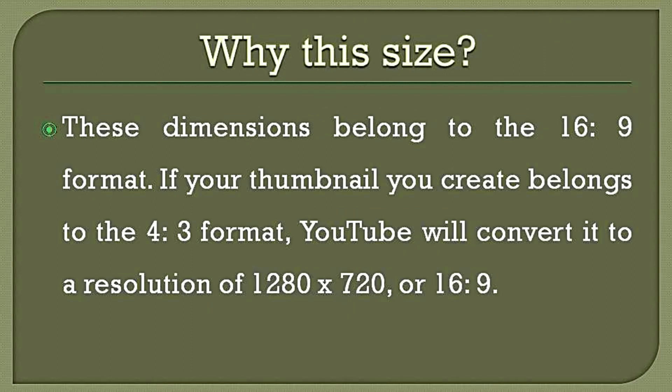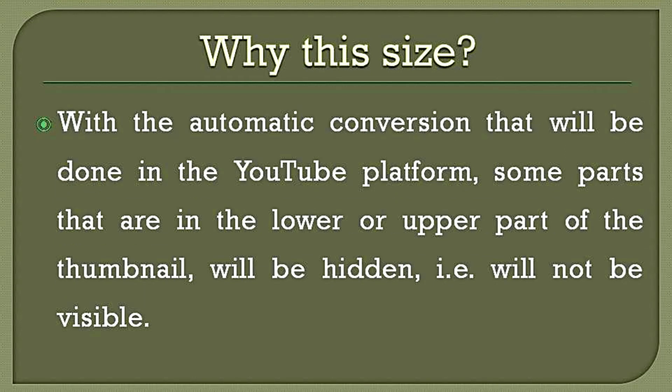These dimensions belong to the 16:9 format. If the thumbnail you create belongs to the 4:3 format, YouTube will convert it to a resolution of 1280x720, or 16:9. With the automatic conversion done by the YouTube platform, some parts in the lower or upper part of the thumbnail will be hidden — that is, will not be visible.